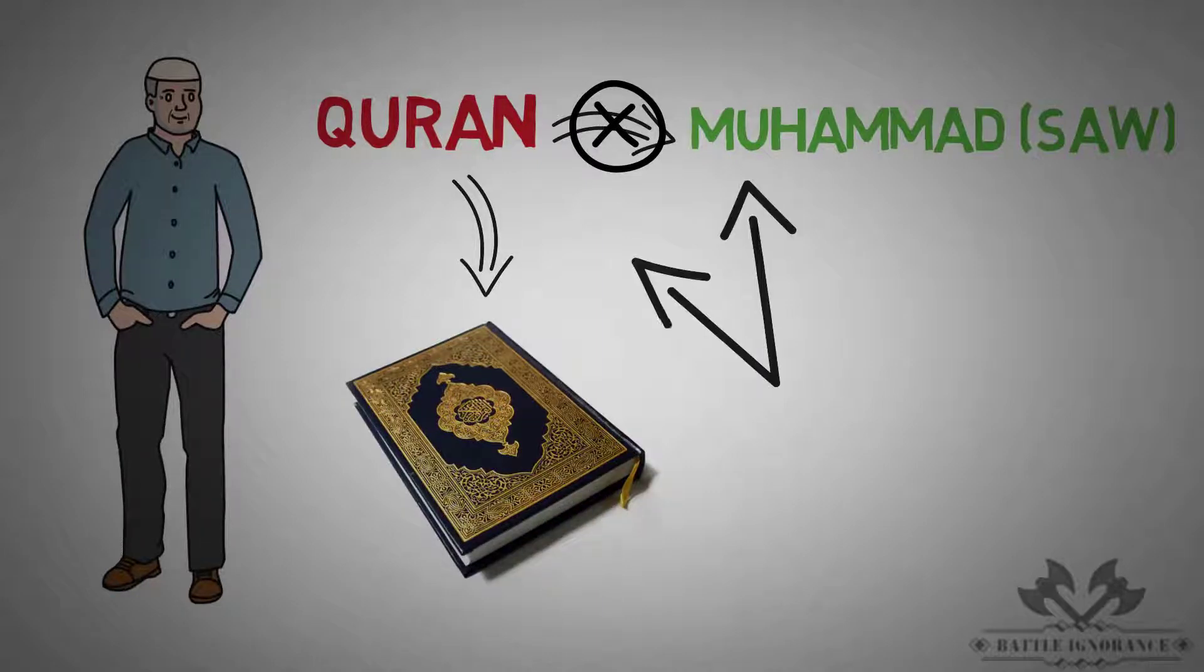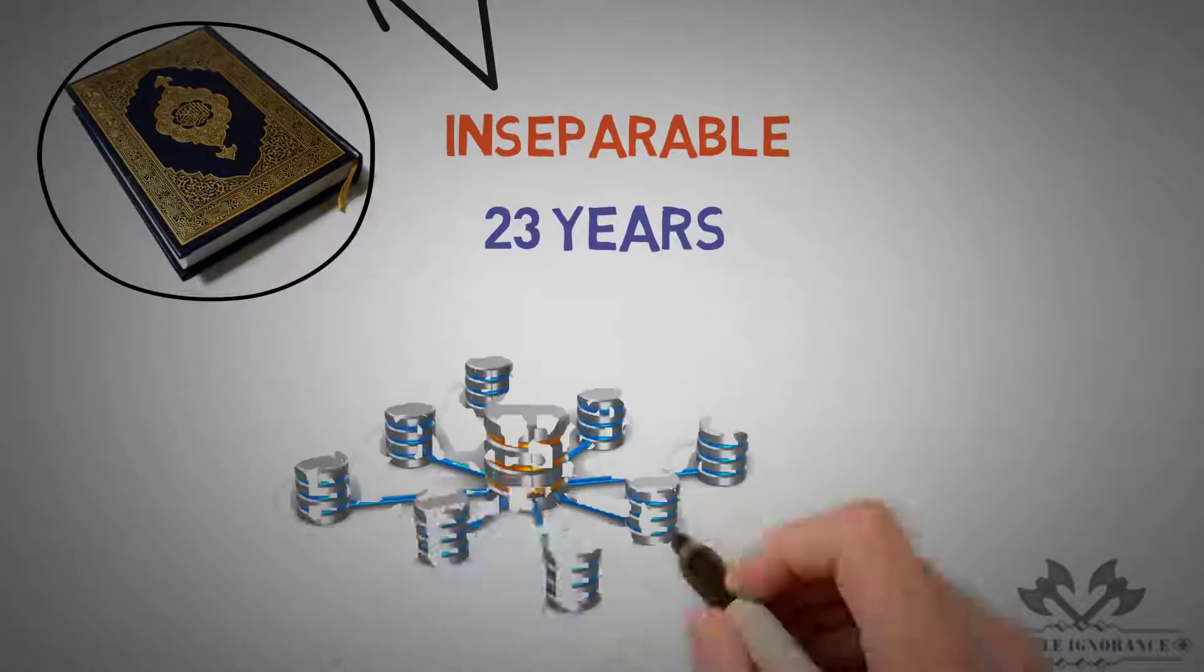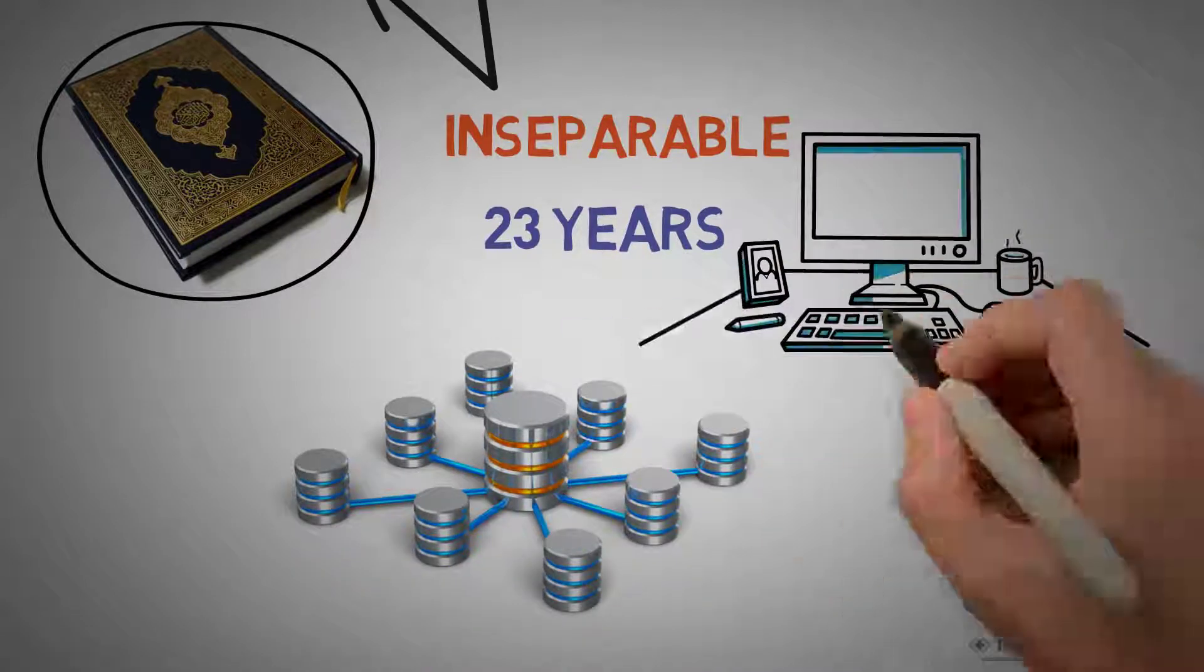For them, the Prophet and the message and the messenger were inseparable. The Qur'an comes down over 23 years. It's not been put in book form. It's not been put into a database. It hasn't been put into a search engine.